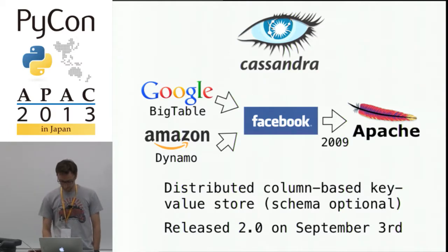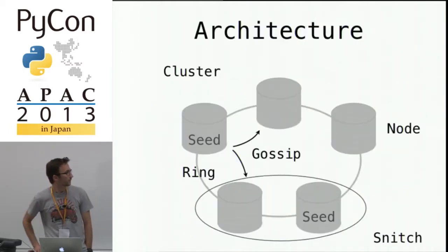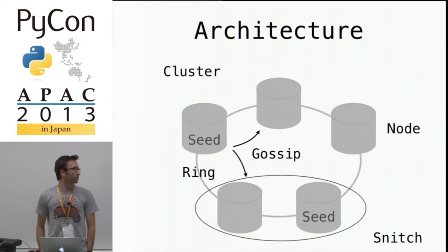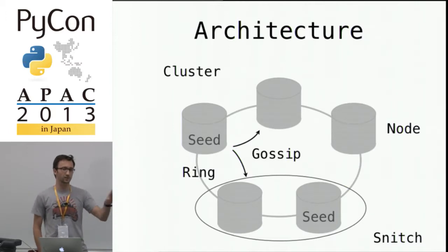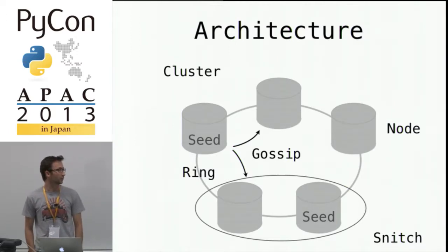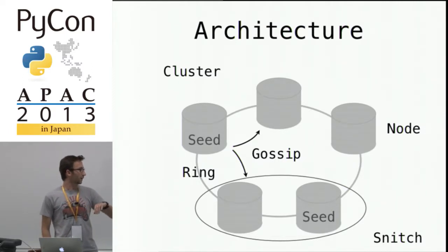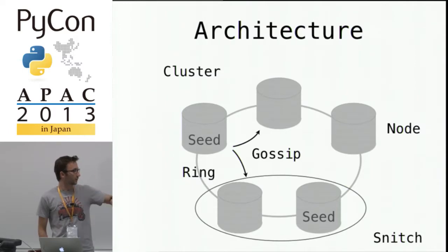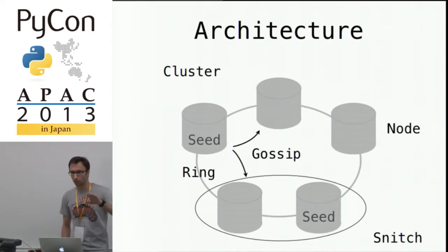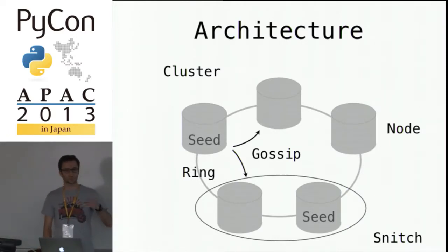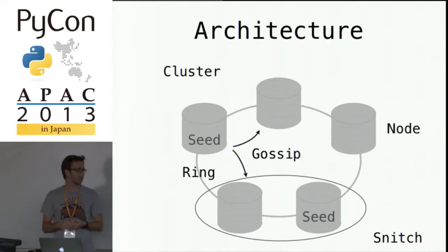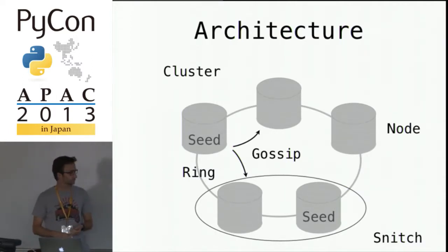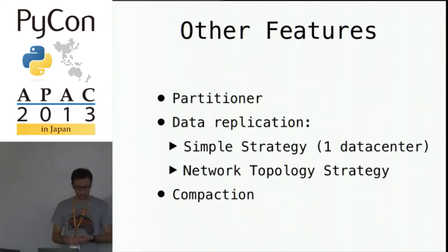Here's a quick overview of the Cassandra architecture. You have nodes — one instance of a Cassandra server — organized as clusters. These clusters are arranged on a ring, and they talk to each other with a protocol called gossip. Some of these nodes are seeds, which help organize new nodes as they join the ring. You also have the snitch concept, which is metadata for each node that tells whether a node is in one data center or another, and that's used for replications.